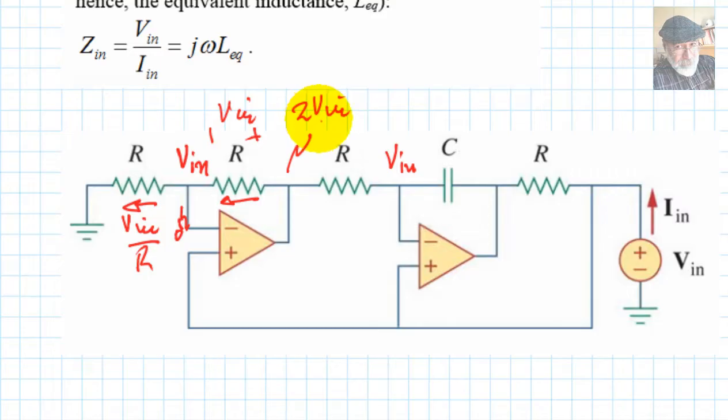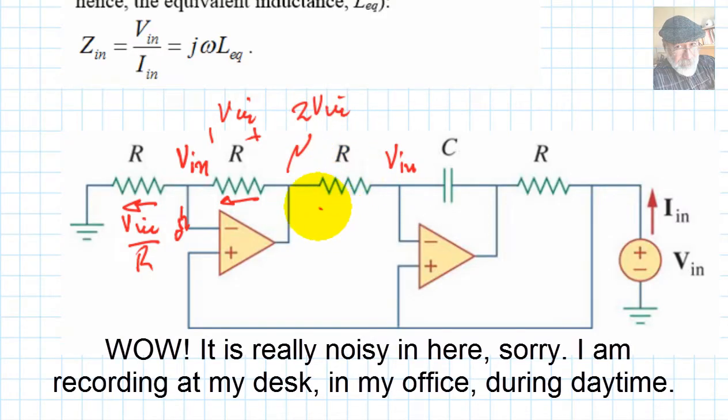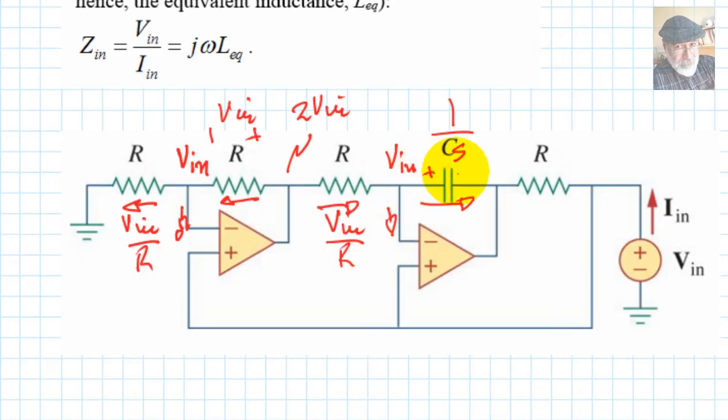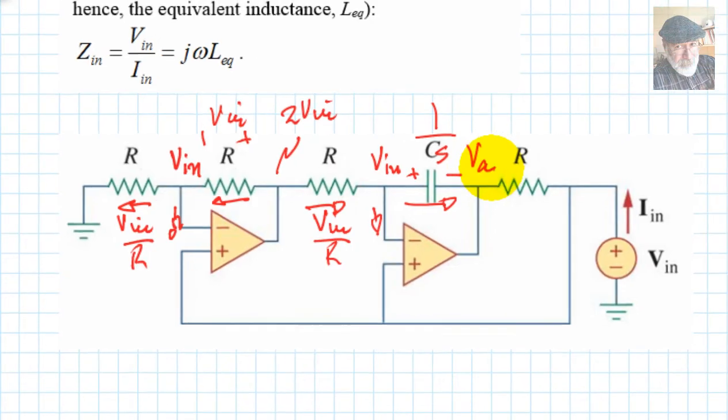But now if we have the voltage here is Vin and this is twice it, so that means that this current is 2Vin minus Vin divided by R, Vin divided by R. The current here is zero, so this current keeps flowing through the capacitor. And the capacitor has an impedance 1 over Cs, so it produces a voltage drop here.